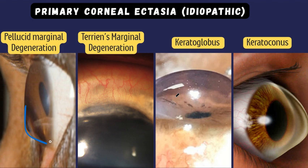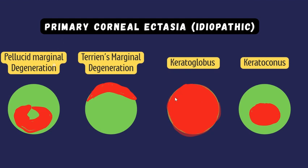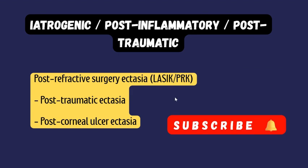The primary corneal ectasias are of four to five types: pellucid marginal degeneration, involving mostly the inferior cornea; Terrien's marginal degeneration, involving the superior cornea; keratoglobus, which is a global ectasia of the entire cornea; and keratoconus, which presents as a central to paracentral conical protrusion. There is also posterior keratoconus, which is associated with Peters anomaly. Secondary or iatrogenic causes include post-refractive surgery ectasia such as post-LASIK or post-PRK.